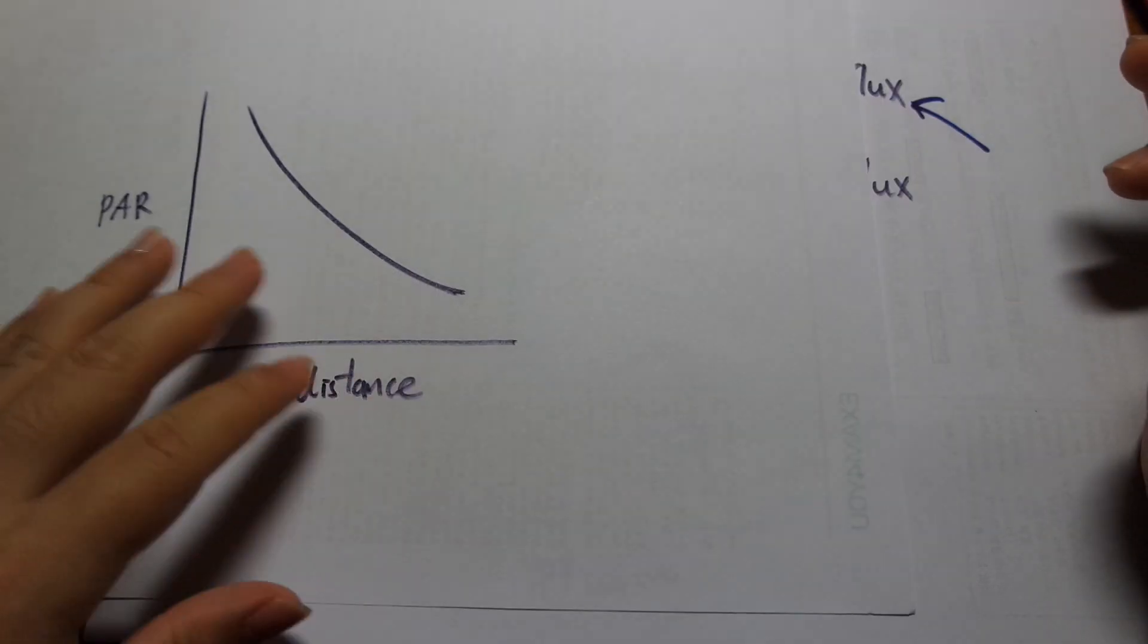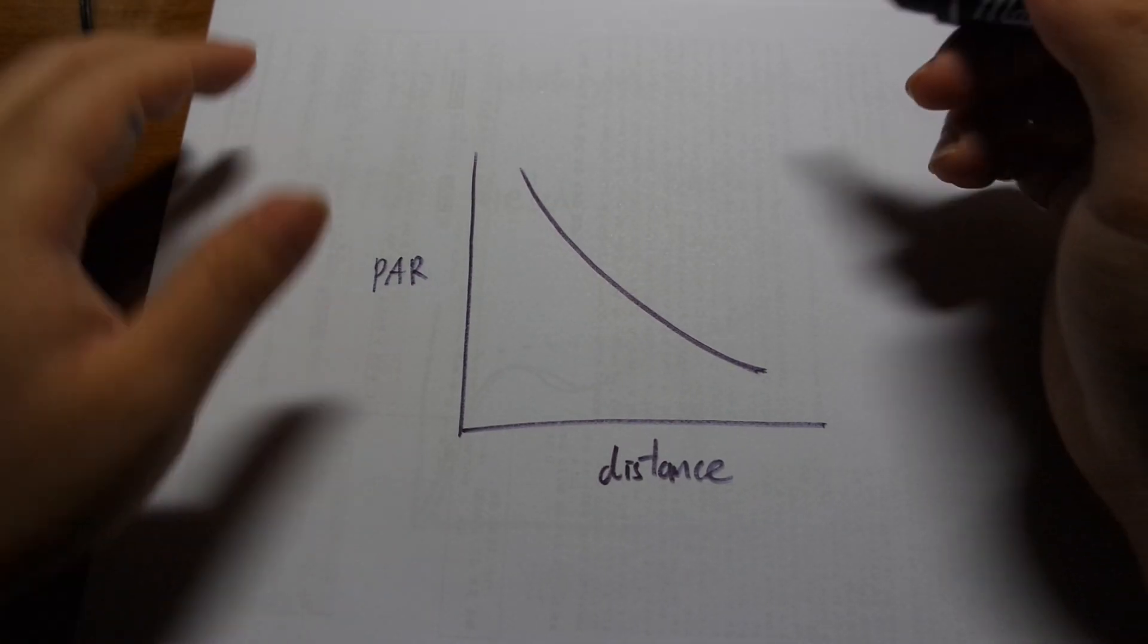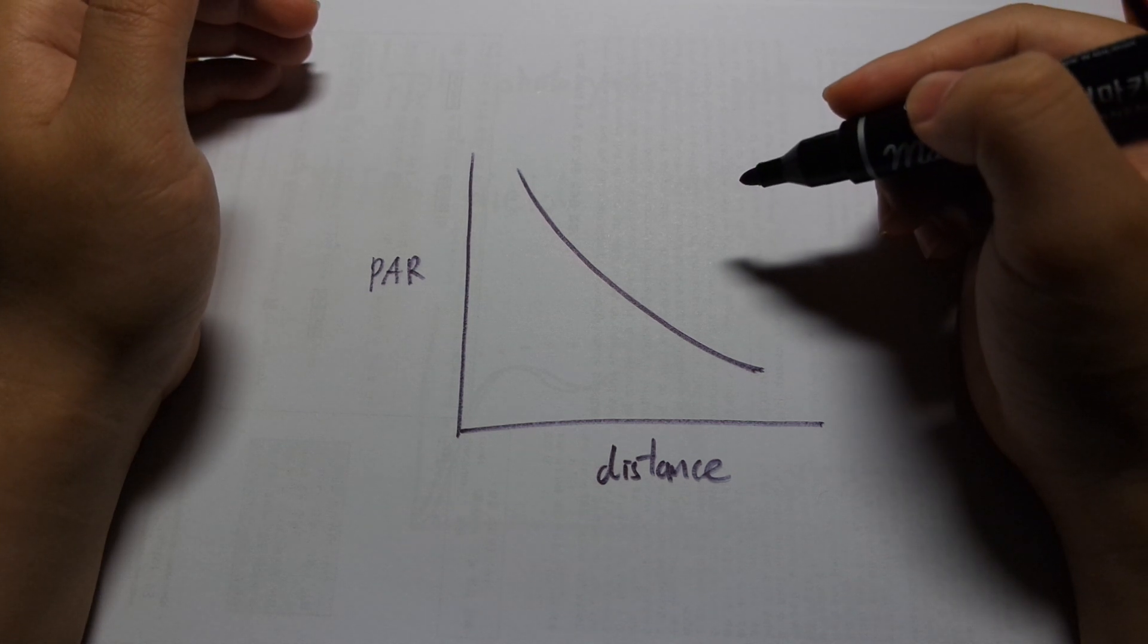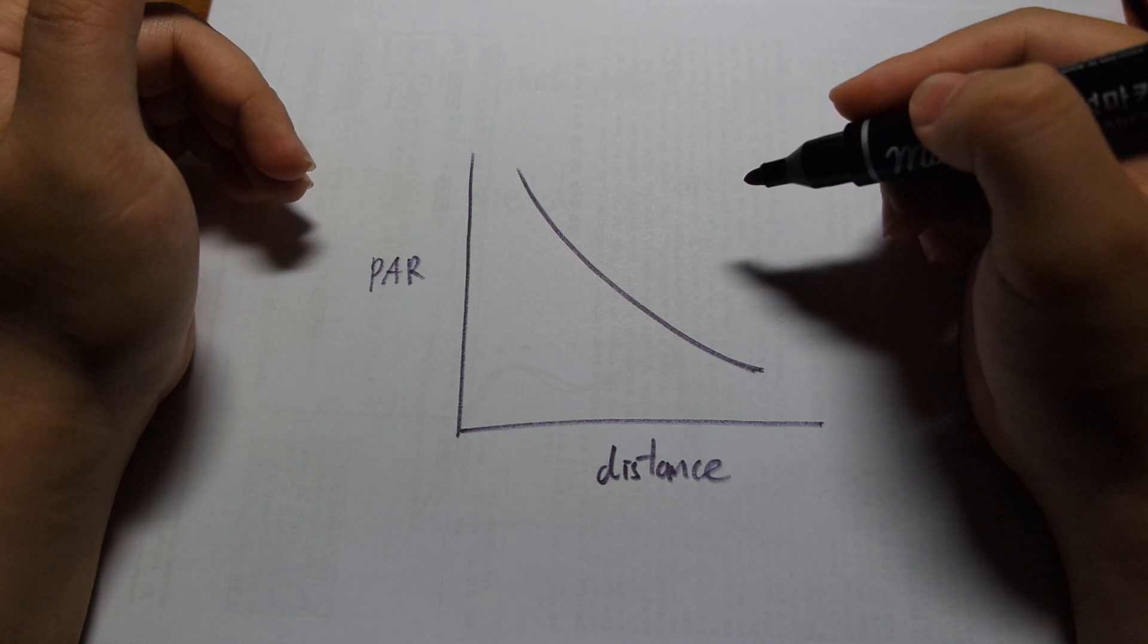Now PAR, just like I've discussed in terms of light intensity over distance, it decreases over distance. All light decrease in terms of intensity over distance. So PAR is no different.